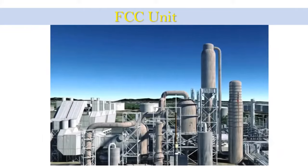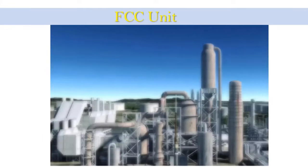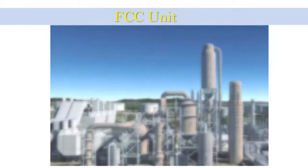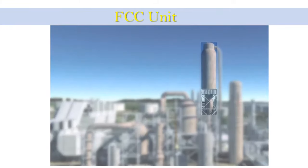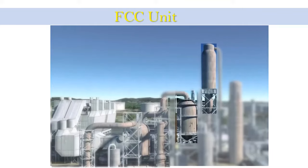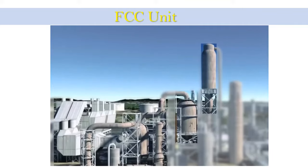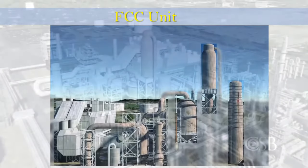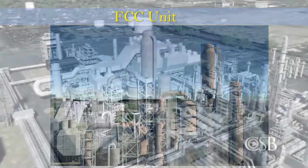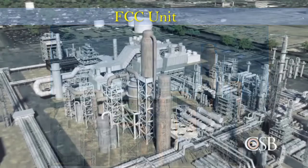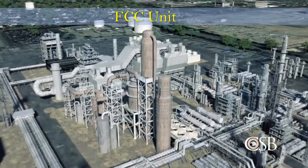The FCC unit comprises four principal component systems: the riser or reactor, the regenerator, the flue gas system, and the main fractionator. This video summarizes the process and the function of each component.